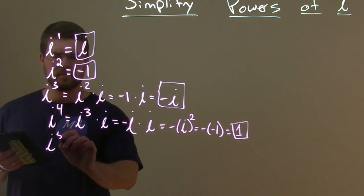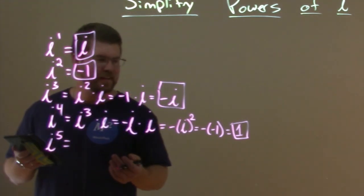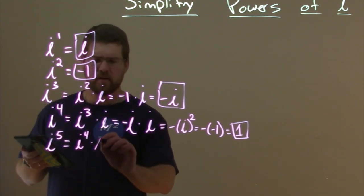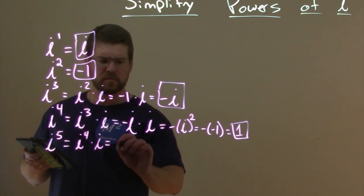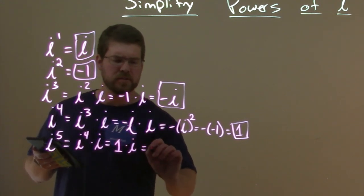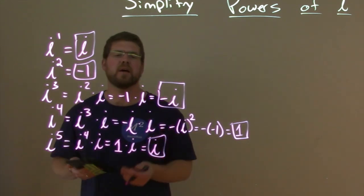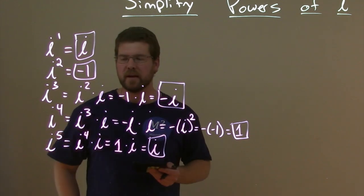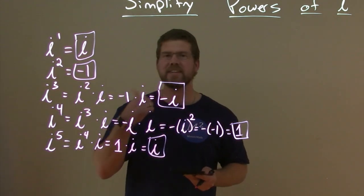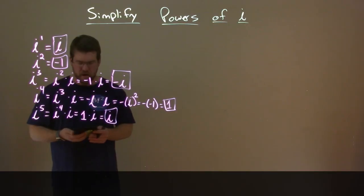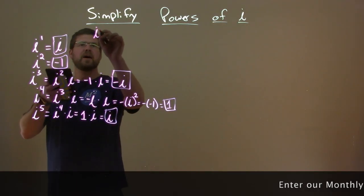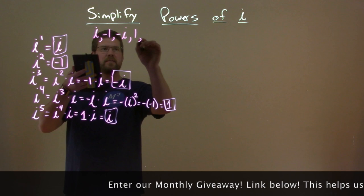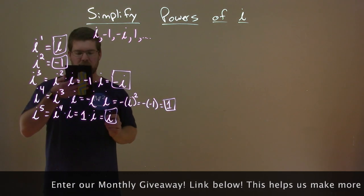What's i to the fifth power? Is this cycle going to continue? I to the fifth is i to the fourth times i, and i to the fourth we just found to be one. So we have one times i, which is i. And now our cycle continues. i to the fifth is just i, so i to the sixth is negative one, i to the seventh will be negative i, and so on. Our cycle is: i, negative one, negative i, one — repeating every four powers.